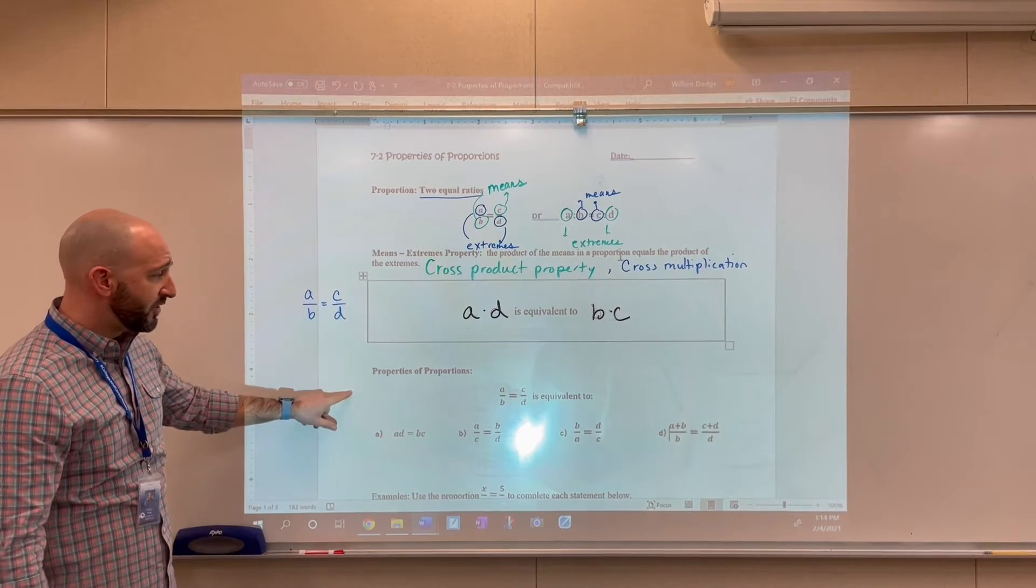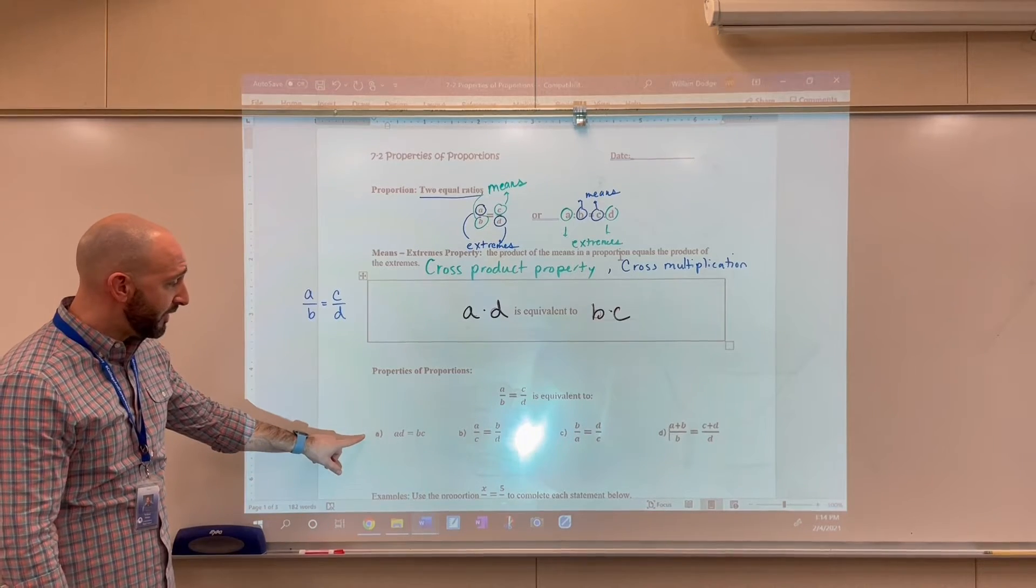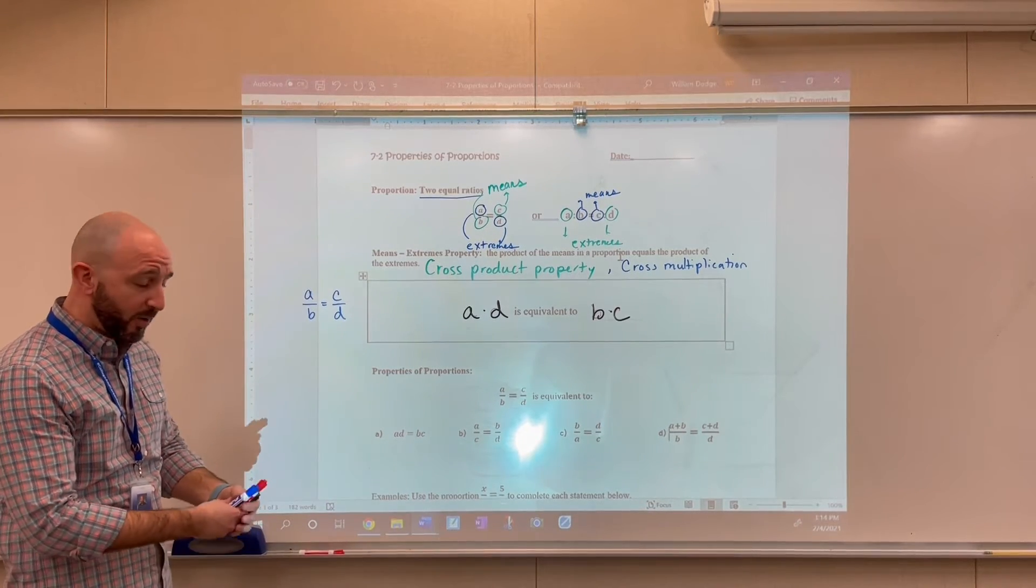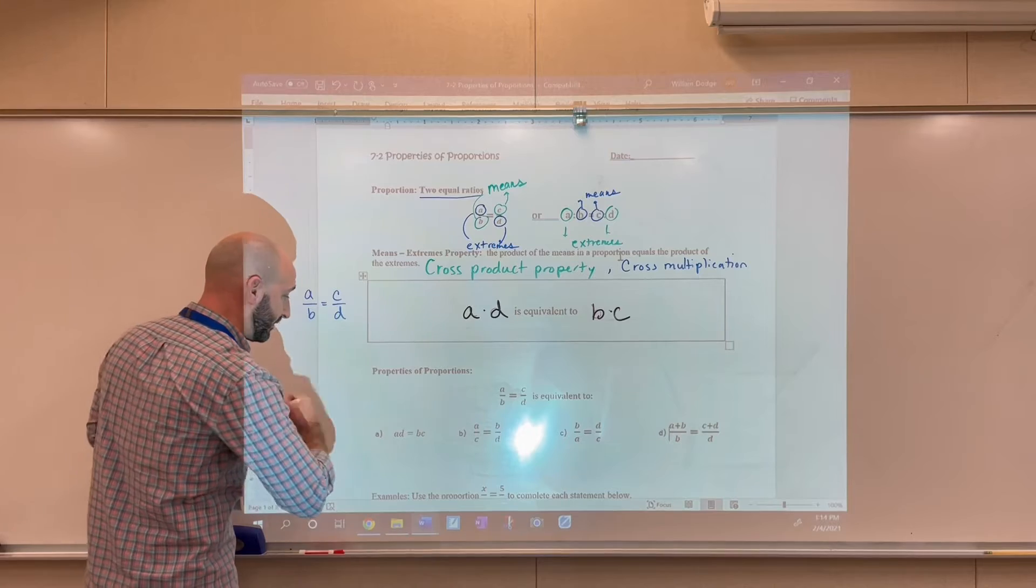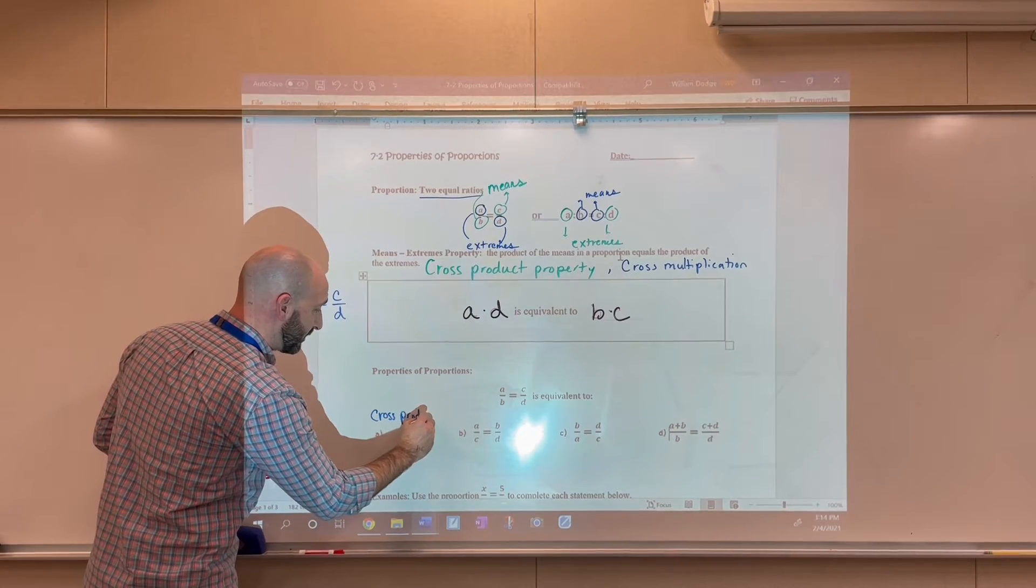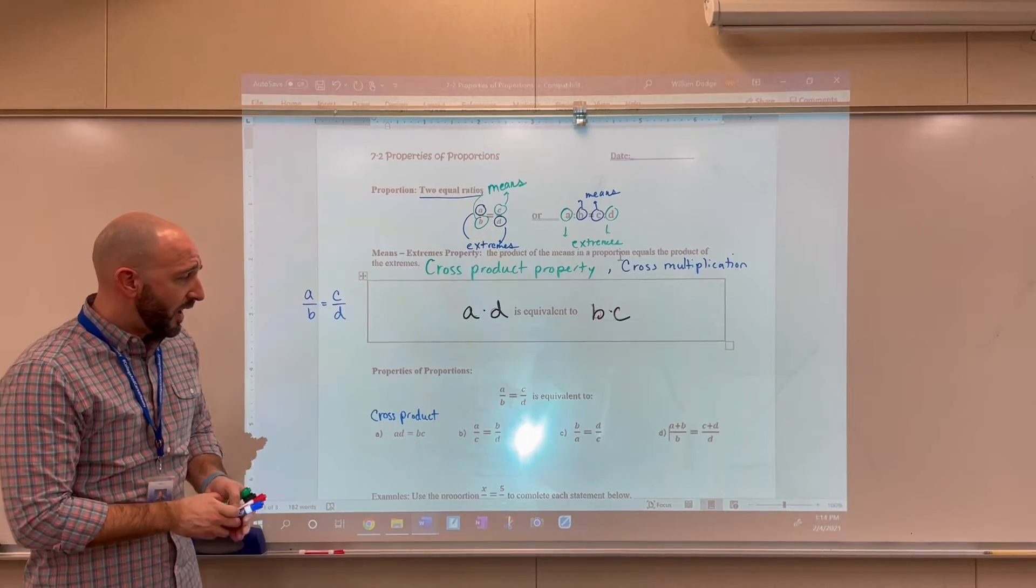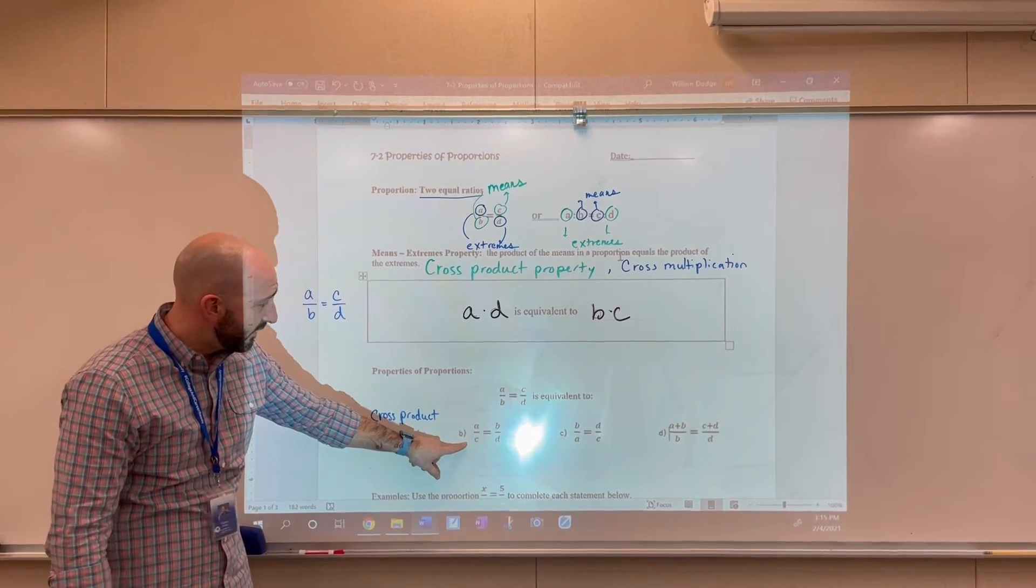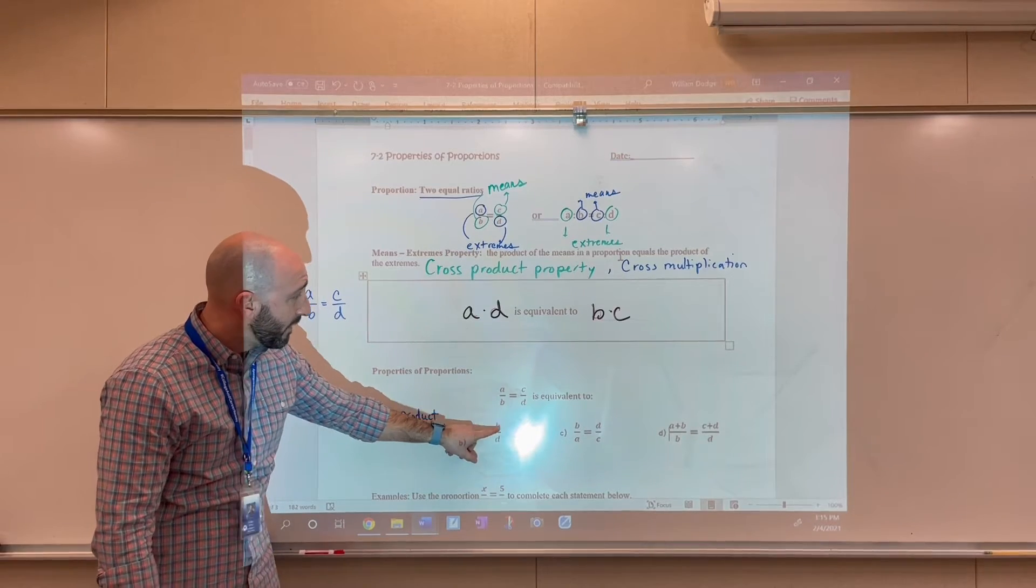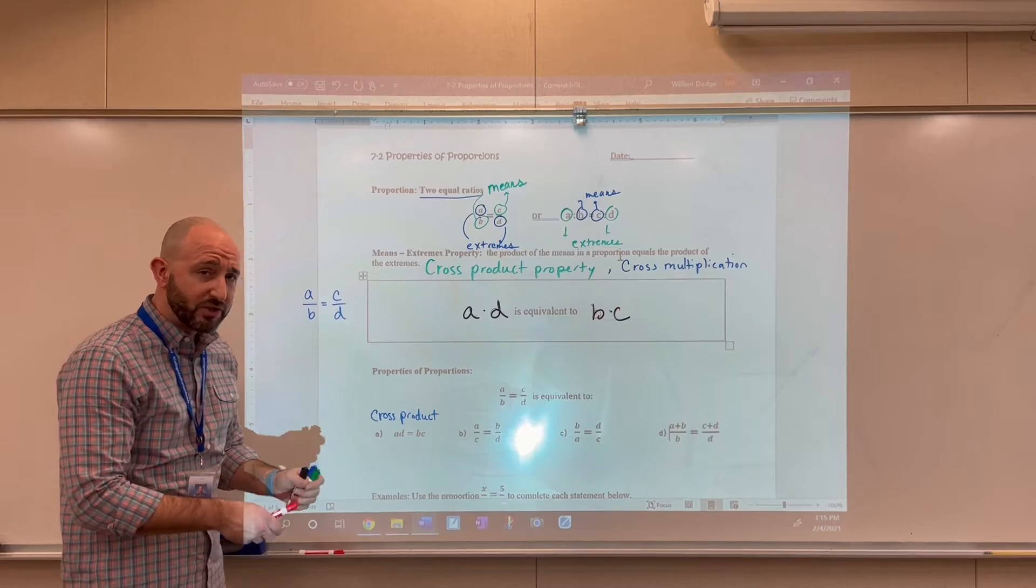Now, there are some additional properties that we can consider as well when we're solving proportions. This first one is the cross-product property that we just discussed. Here, what you'll notice is that the means have been changed. So that's called the interchange means property.